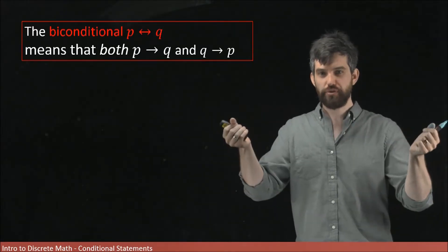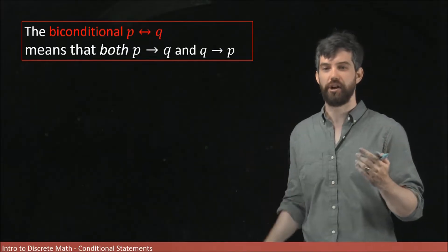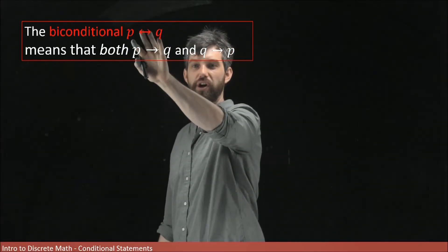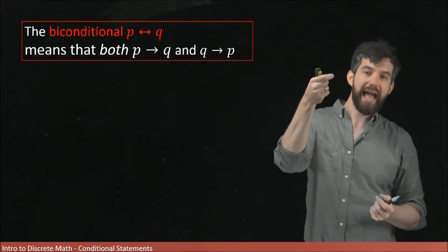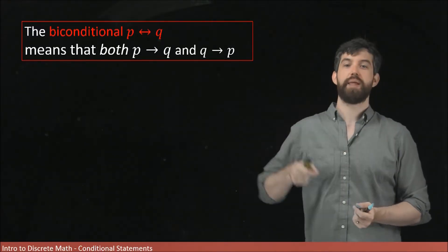And when both of those are true, what we can have is something called the biconditional. And you'll notice here that in the biconditional, it's got this sort of double-sided arrow, because it's saying that P implies Q, and it's the case that Q implies P.